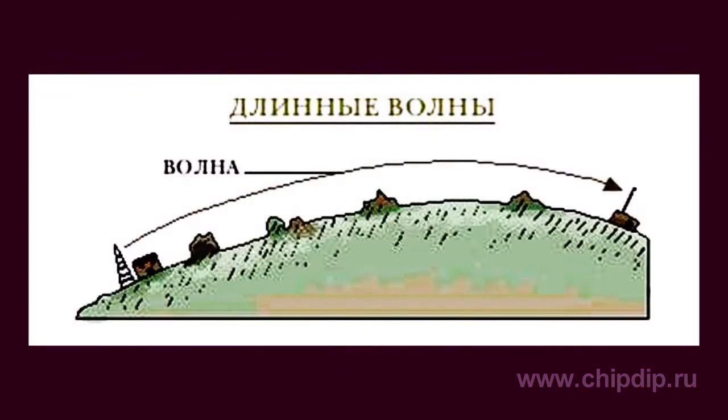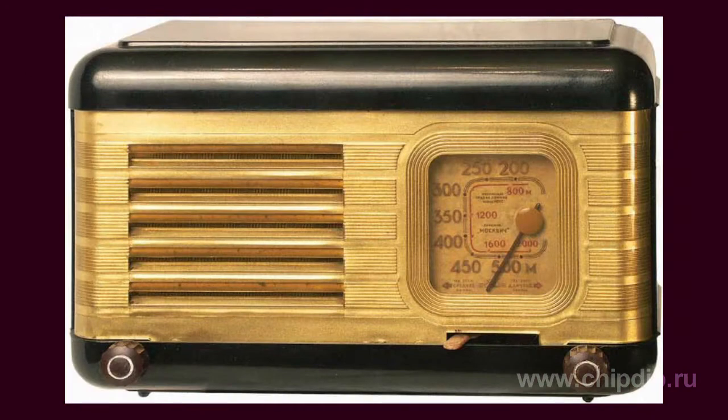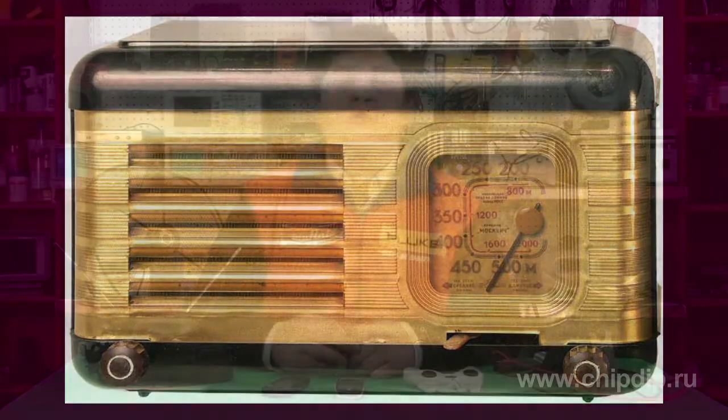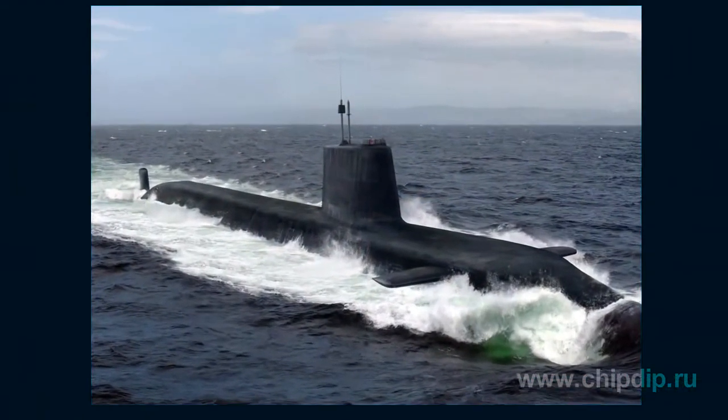Unlike short waves, long waves can be received at considerable distances from the source if the signal is powerful enough. Due to diffraction along the Earth's surface, they can propagate thousands of kilometers. Super-long waves, with wavelengths over 10 kilometers, are poorly absorbed by the Earth's surface and water and are almost insensitive to ionospheric disturbances. They can be used for communication at any distance, making them ideal for communicating with submarines.